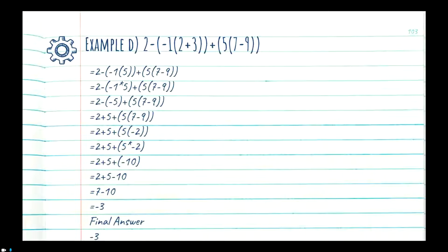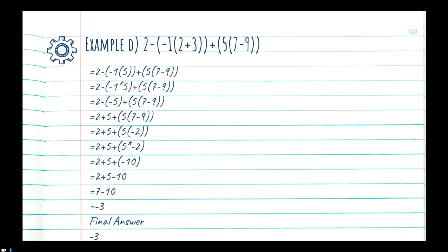The brackets are all gone, so we can start solving the equation as normal. 2 plus 5 is equal to 7, and we drop the rest of the equation. 7 minus 10 is equal to negative 3, giving us a final answer of negative 3. This example was intentionally long — I wanted to give you an example with lots of child brackets and length, so you'd feel comfortable with a long equation. It doesn't matter how many more brackets I would have added — more children within children, or more siblings at the same level.